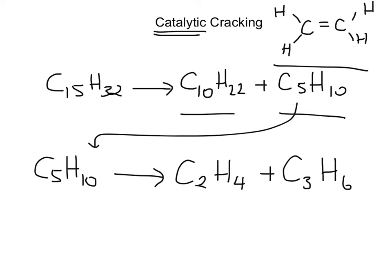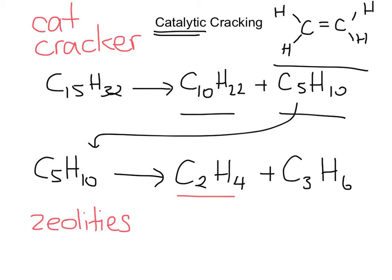This process is all done in a single chamber called a cat cracker. It's all done in the one chamber with the one catalyst, and we call these zeolites. Zeolites are just compounds of aluminium, silicon, oxygen, you get some metal ions in there as well. But remember catalysts don't have any impact. They're not reacting with our products. They're simply there to increase the rate of reaction.